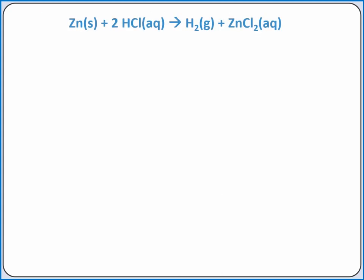Our first step is to write a balanced chemical equation for the reaction. We can calculate the mass of zinc using dimensional analysis if we have the moles of hydrogen gas that were produced. To determine the moles of hydrogen, we'll use the ideal gas law rearranged for moles of gas. Notice that if we just want the moles of hydrogen gas, we'll need to use the partial pressure of hydrogen gas instead of the total pressure. So we'll need Dalton's law of partial pressures to calculate the partial pressure of hydrogen gas.